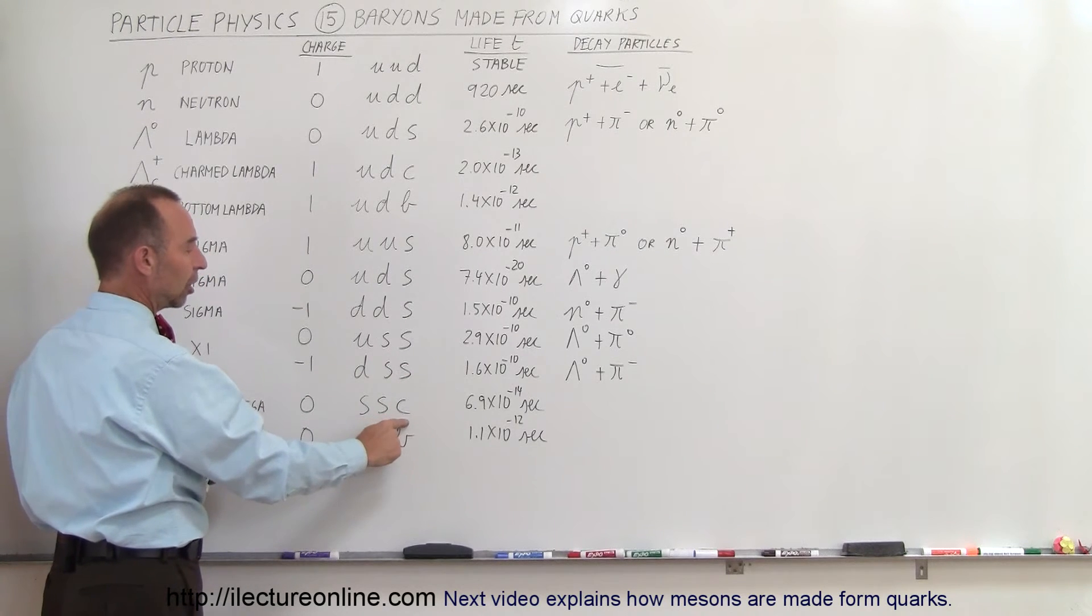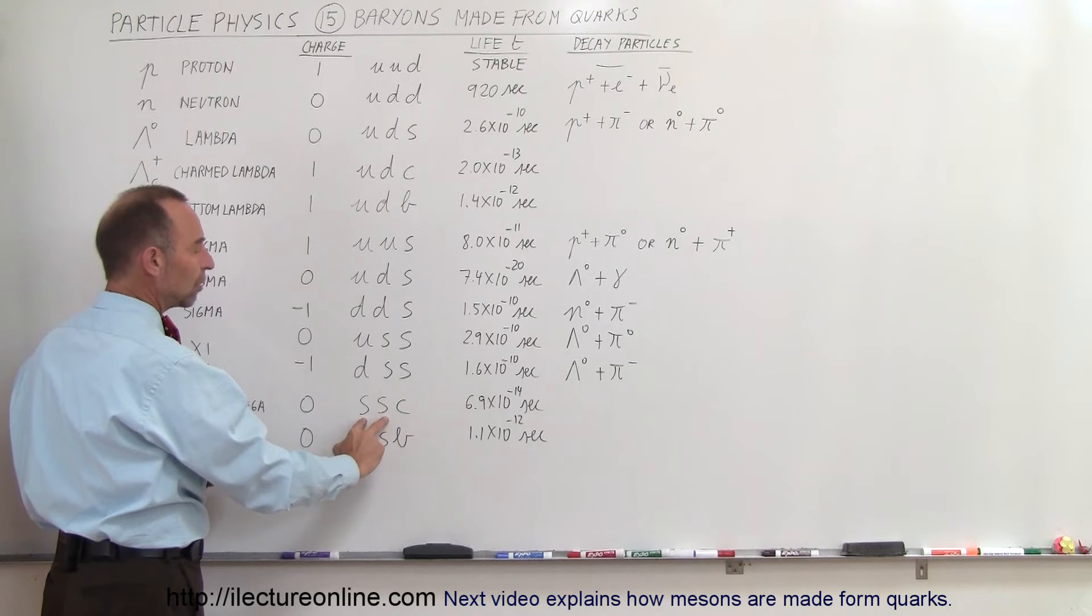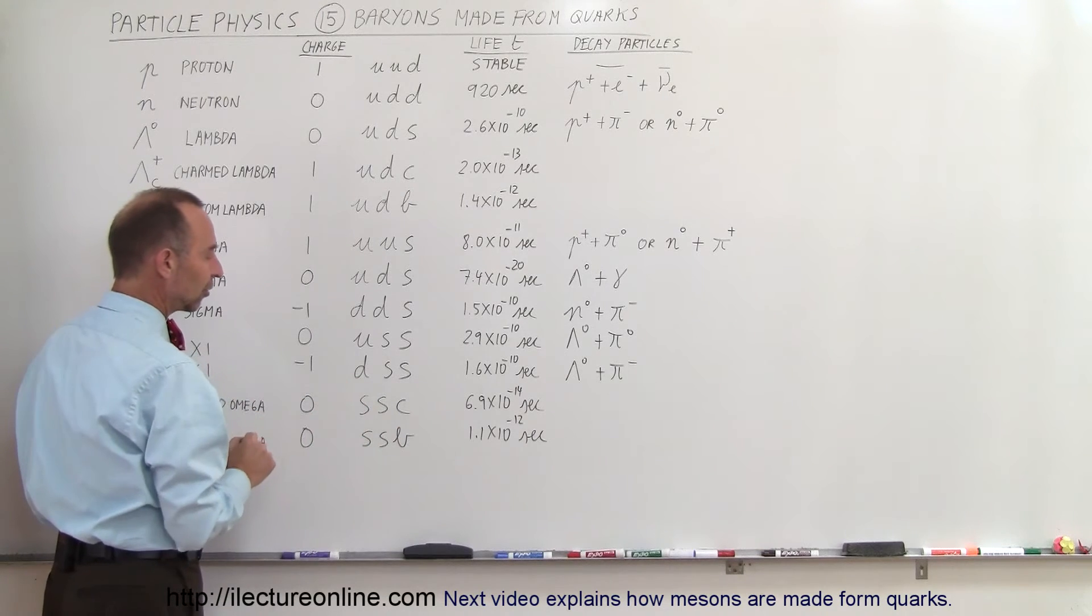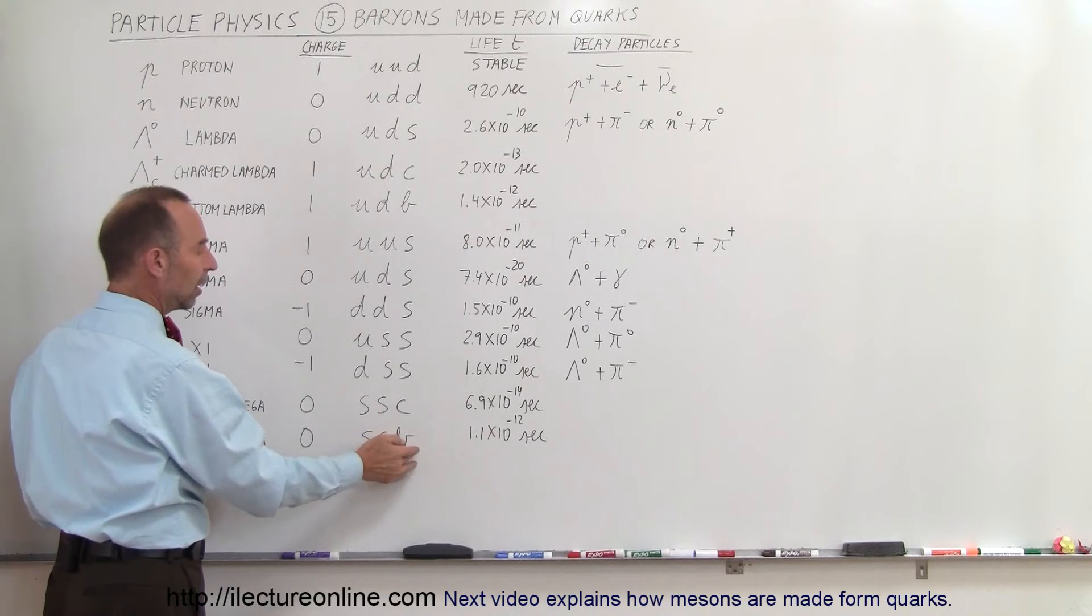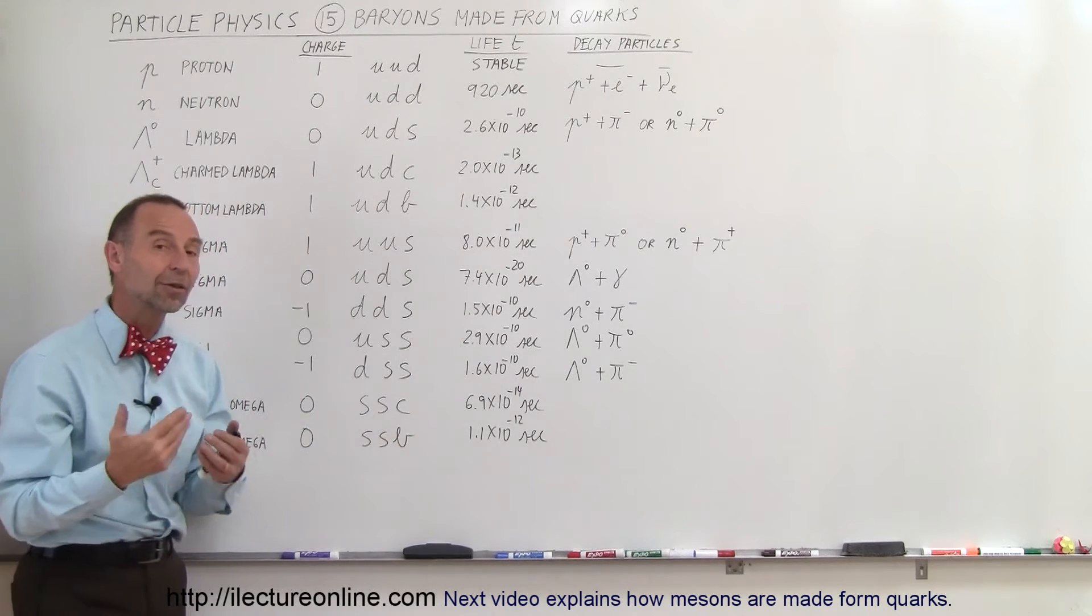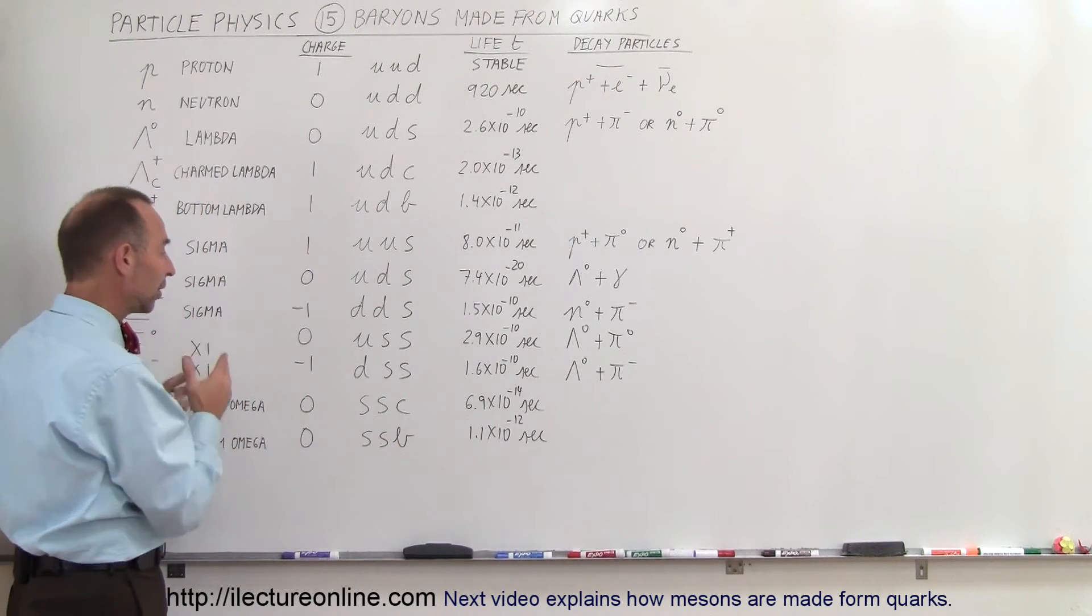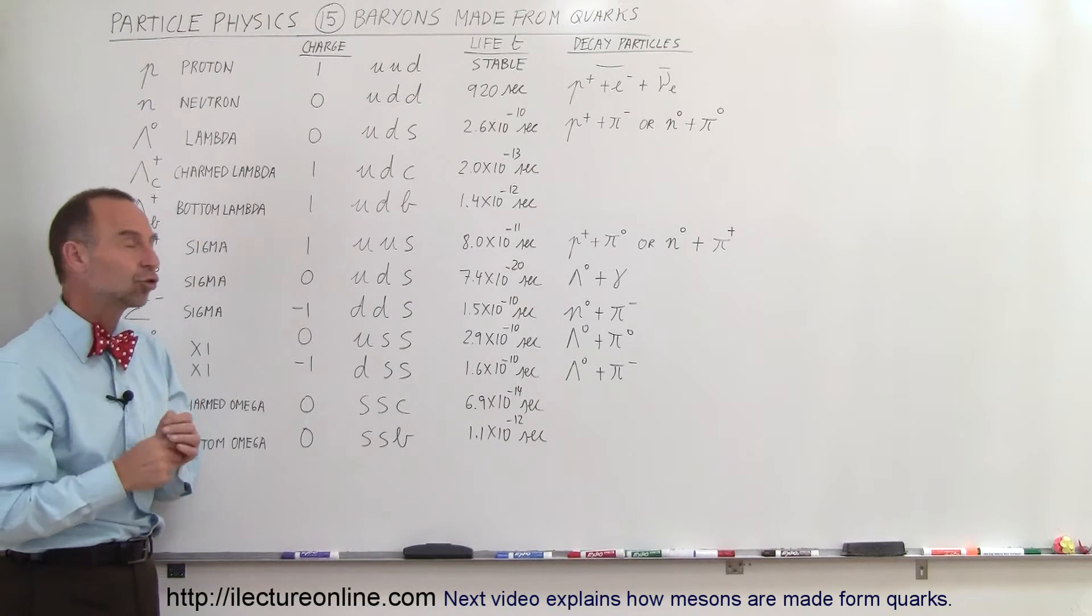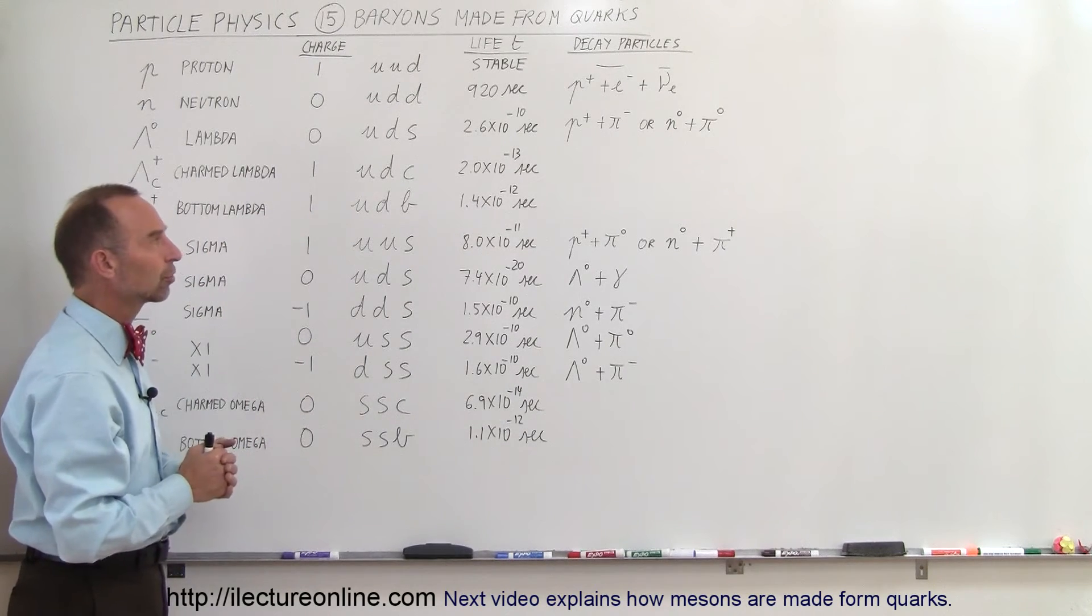And the charm is up two-thirds, the two strange is a minus a third, so that cancels out. The bottom is plus two-thirds, the two strange is minus a third, so they cancel each other out. So that's how you find how the particles that they make up have a charge on them, depending upon the charge of the different quarks.